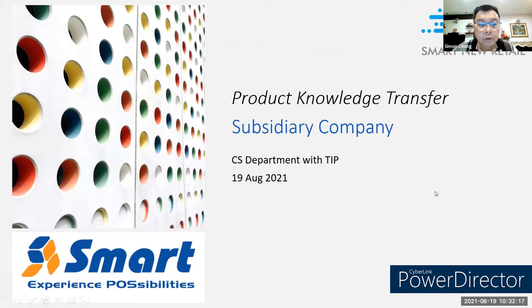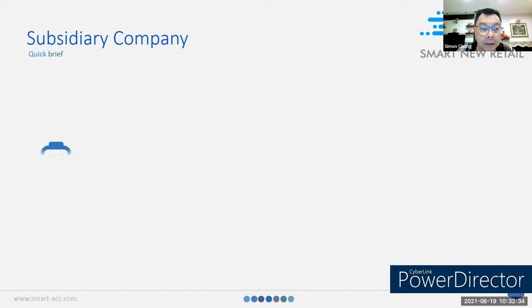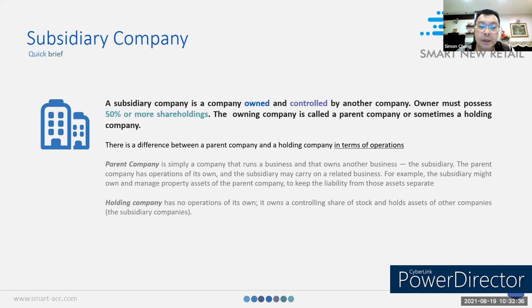We cover the subsidiary company. I think you know what's called a subsidiary company. Anyway, I just have a great briefing for you. What's about subsidiary company? What's the purpose of a subsidiary company, the benefit to a company? A subsidiary company is basically to extend their business model — another new business model for the current operating company.